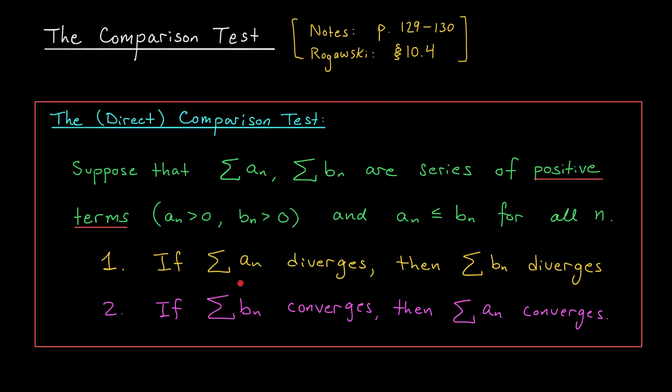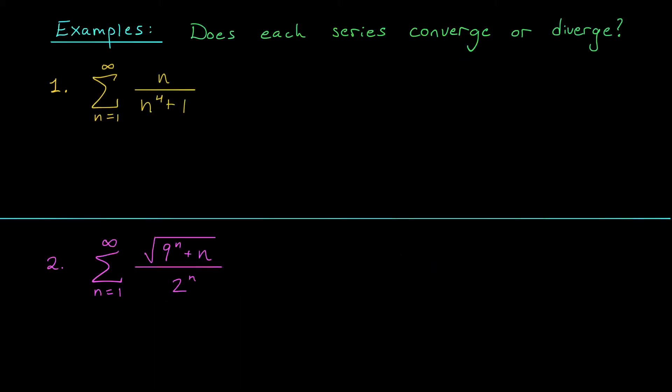So to summarize: if the small series diverges, then the big series diverges; if the big series converges, then the small series converges. The general strategy when using the comparison test will be to compare your series with something that's much easier to work with, like a geometric series or a p-series.